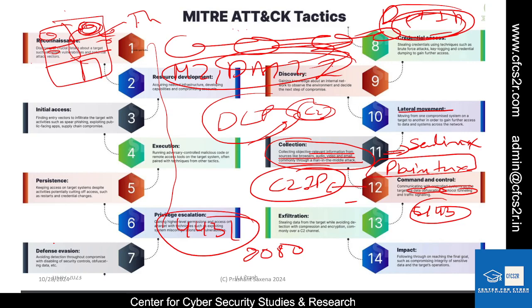Security teams should also watch for use of non-standard ports and traffic to dynamic DNS routing — all these things can be helpful in finding command and control functionality.